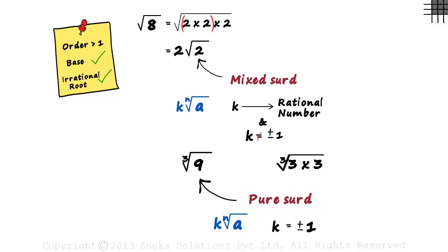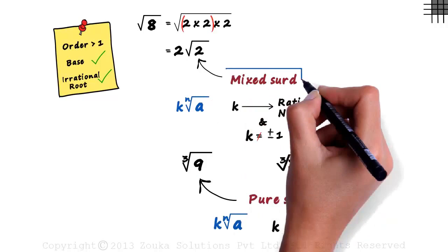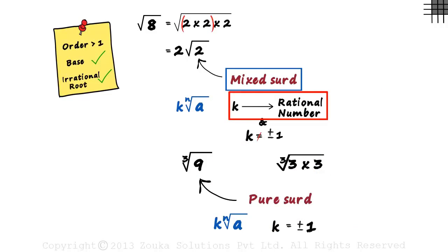So these are the two types of surds. Mixed surd, in which k is a rational number but does not equal plus or minus one. And a pure surd, in which k equals plus or minus one. And also keep in mind that whatever be the value of k, this will be a mixed or a pure surd only if nth root of a is a surd.